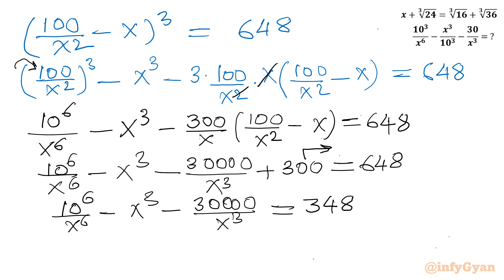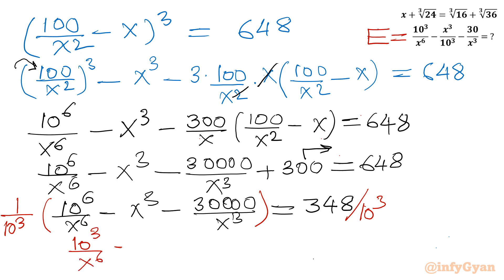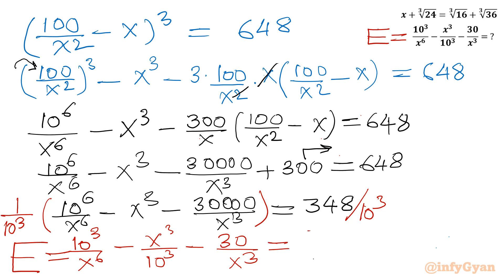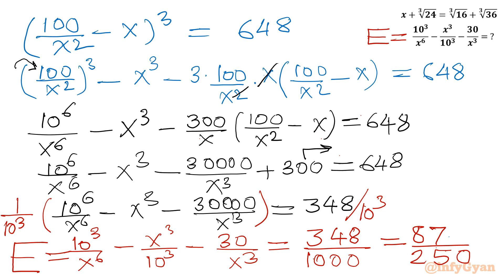Now dividing the entire equation by 10³ (which is 1000), we get 10³/x⁶ − x³/10³ − 30/x³ = 348/1000. Dividing both numerator and denominator by 4 gives us the final answer, and this is our required expression E.